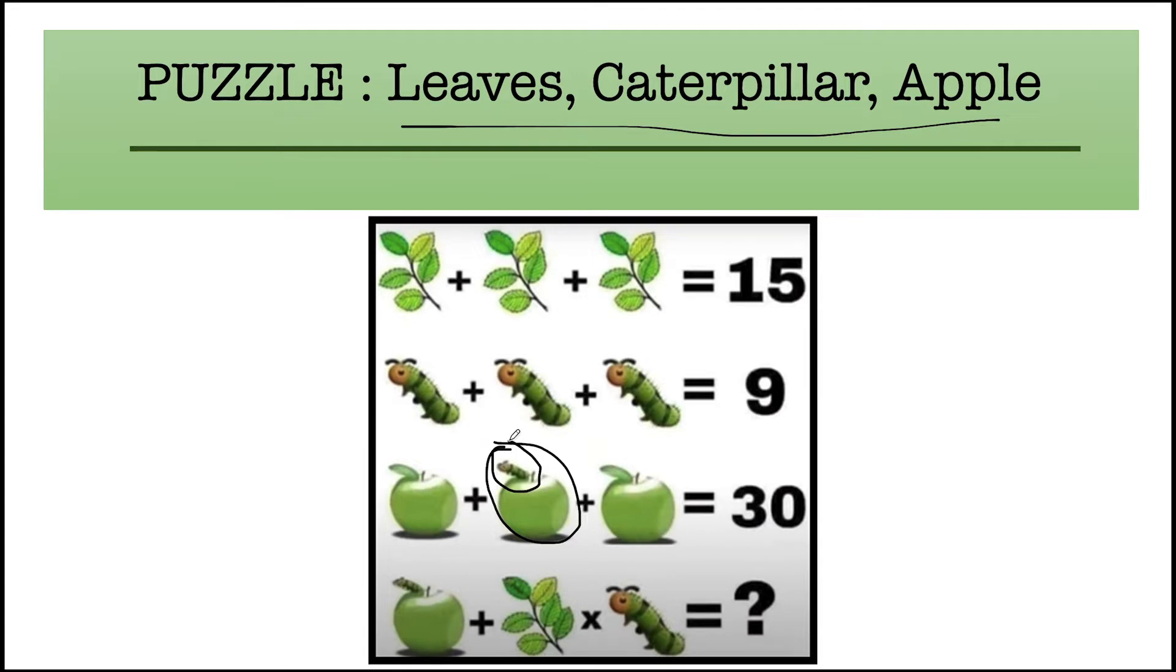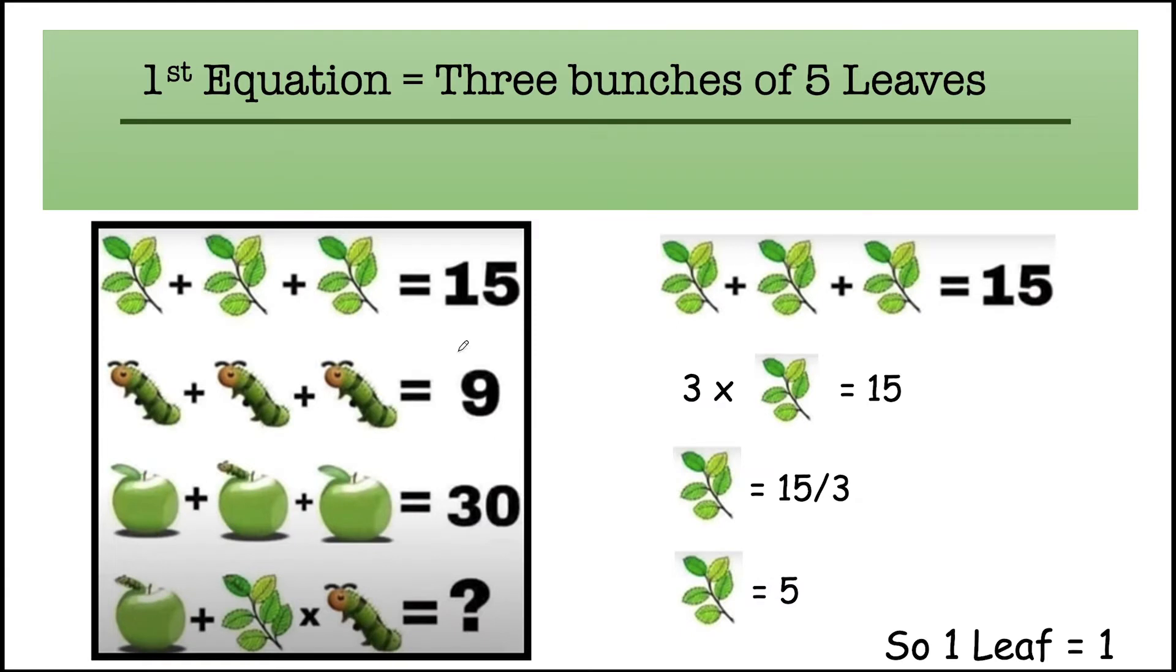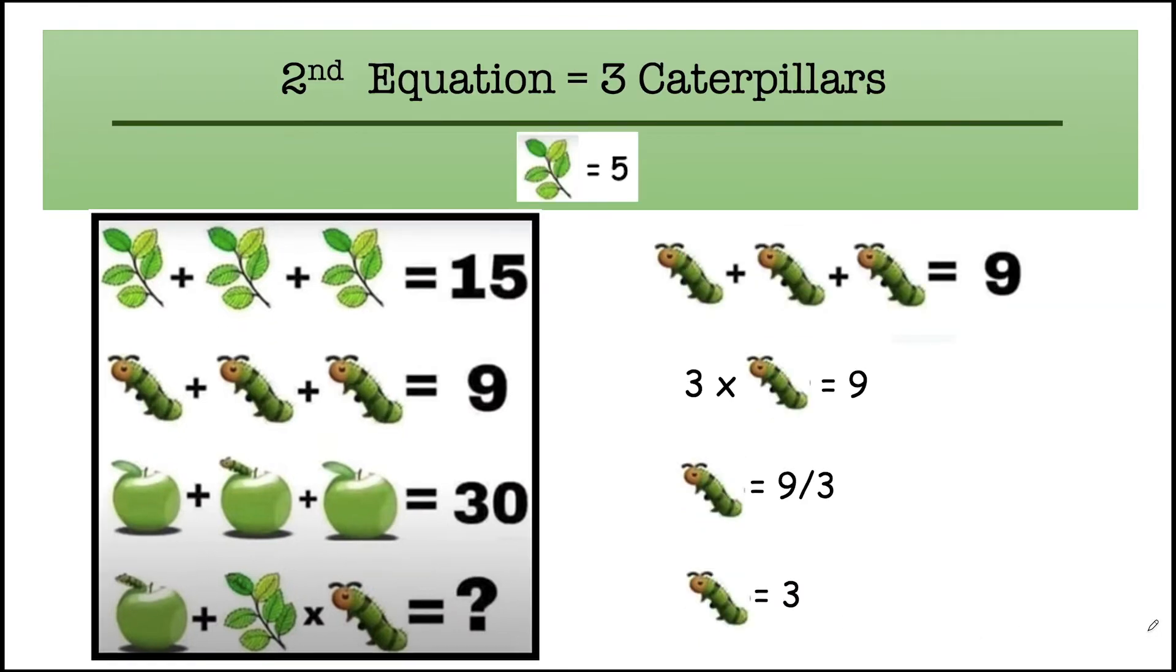And solve the first equation. In the first equation, you can see there are three bunches of five leaves and their total value is equal to 15. When you solve this equation, you'll get the final value of five bunch of leaves is equal to five, so one leaf will be equal to one.